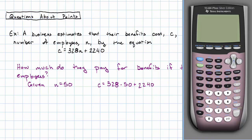Having the calculator do that arithmetic, 328 times 50 plus 2,240, C is 18,640. Our answer: $18,640.